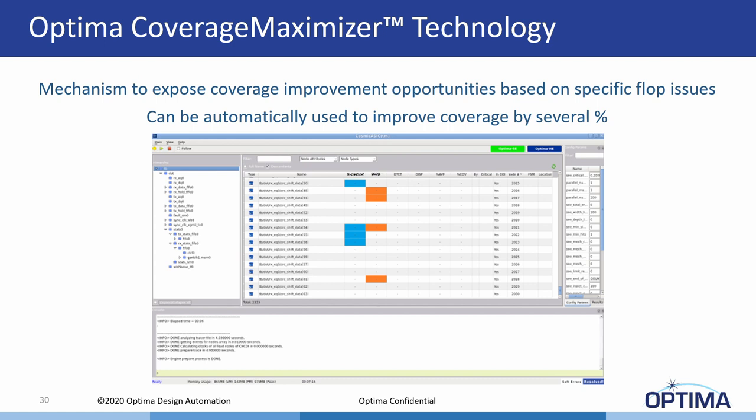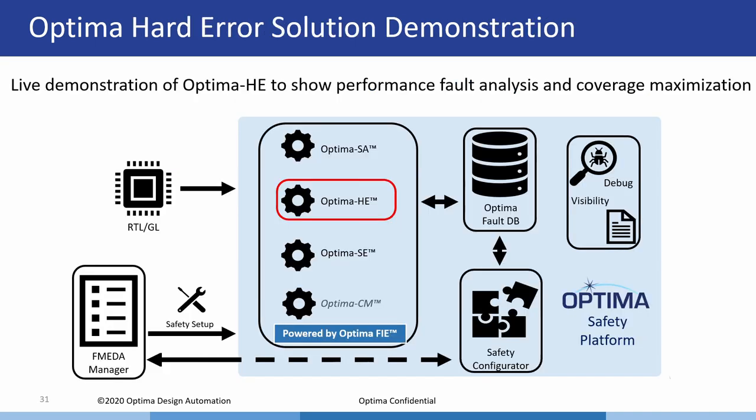This slide shows a benchmark where the FIE — the fault injection engine — is being demonstrated with an acceleration greater than 1000x on a real large commercial production design. Of course all benchmarks vary depending on various factors, but this technology is now well proven to provide dramatic acceleration. Coupled with FIE is our coverage maximizer technology. Once simulation has been done, often there are coverage issues, and finding the reason for these can be a very complex and onerous task. The coverage maximizer automatically looks for coverage goals and allows engineers to reach a high level of diagnostic coverage very quickly.